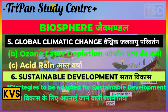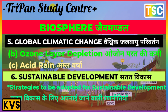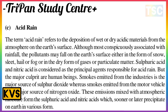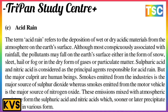The next important topic is acid rain. The term acid rain refers to the deposition of wet or dry acidic material formed in the atmosphere onto the Earth's surface. This is most commonly associated with rainfall, but pollutants may fall on the Earth's surface in the form of snow, fog, or dry forms of gas or particulate matter. Sulfuric acid and nitric acid are considered the principal agents responsible for acid rain.